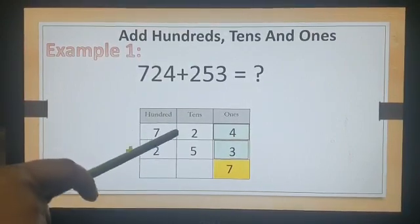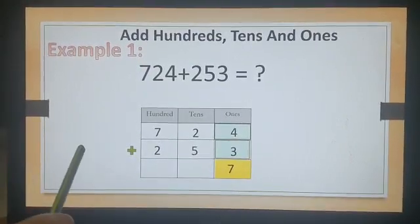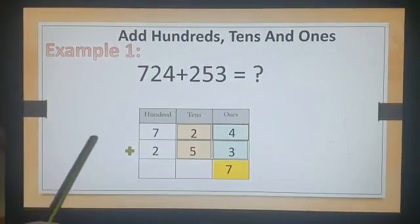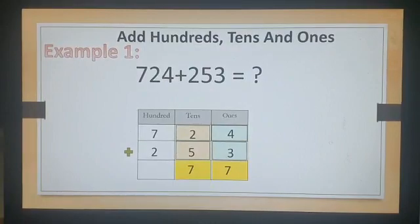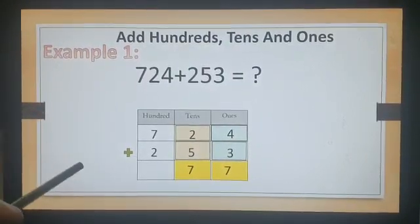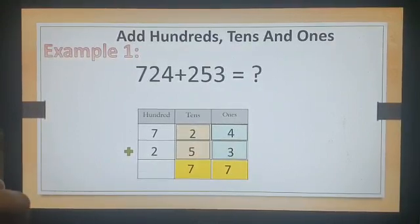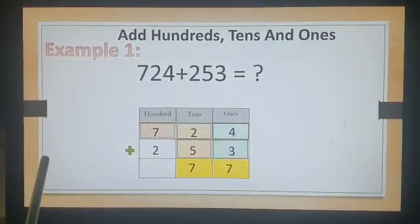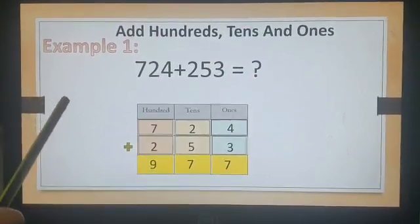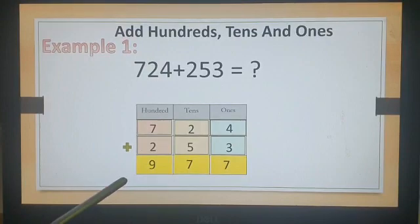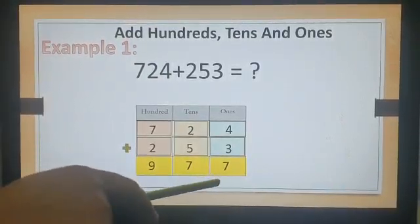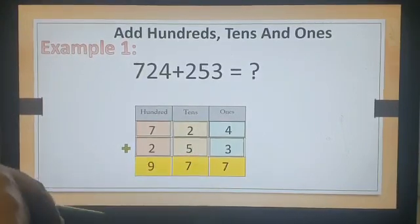Step 2: Add the tens. 2 plus 5 is 7. Yes, you got it again. Step 3: Add the hundreds. 7 plus 2 is 9. Yes, you are right. So your answer is 977. You got it.